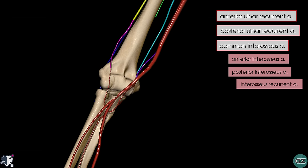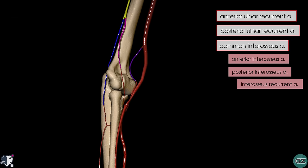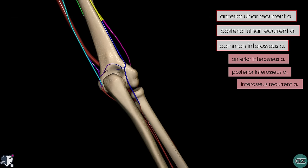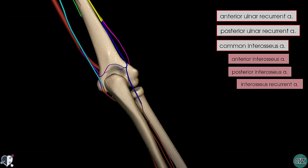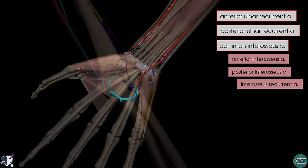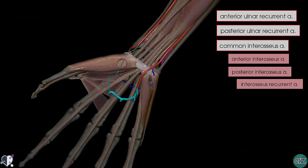So we've taken a good look at the rich anastomotic network formed around the elbow joint, and we've looked at the proximal branches of the radial and ulnar arteries that contribute to this, as well as the branches of the brachial artery. In the next tutorial, we'll take a look at the distal branches of the radial and ulnar arteries and the blood supply to the hand and the wrist.